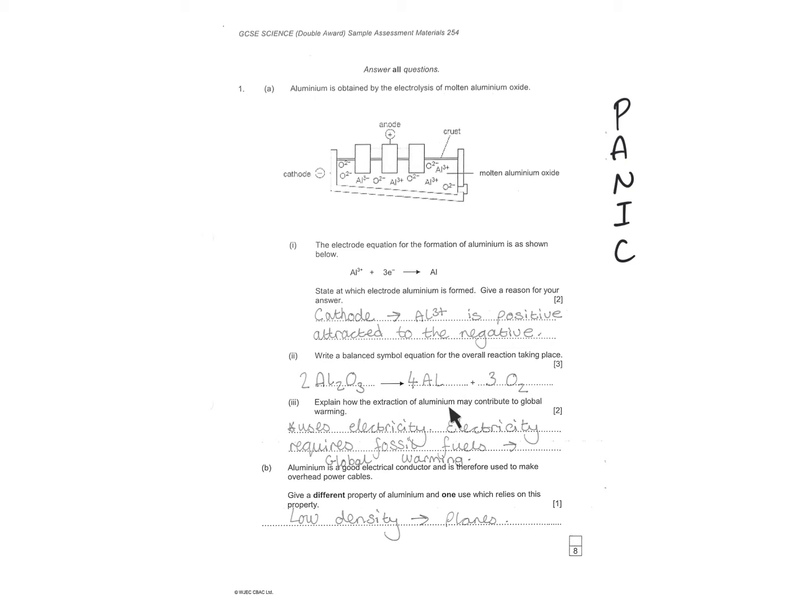Explain how the extraction of aluminum may contribute to global warming. Uses electricity. Electricity requires fossil fuels. Global warming. Another use is low density, so it's used in planes. You could have gone with cans. It's malleable. It can be bent into shape.